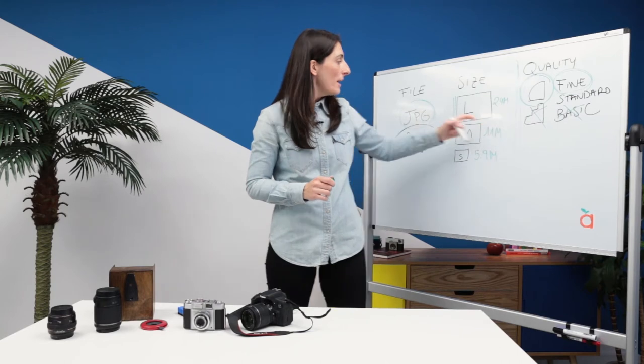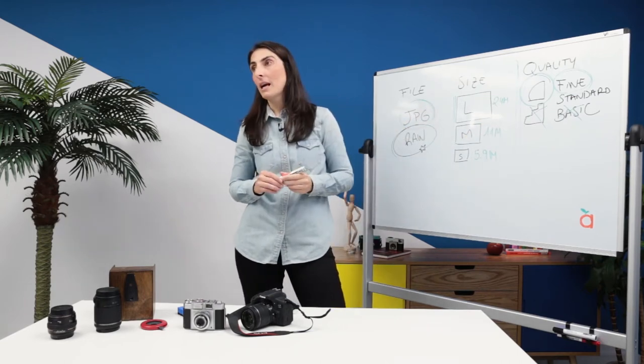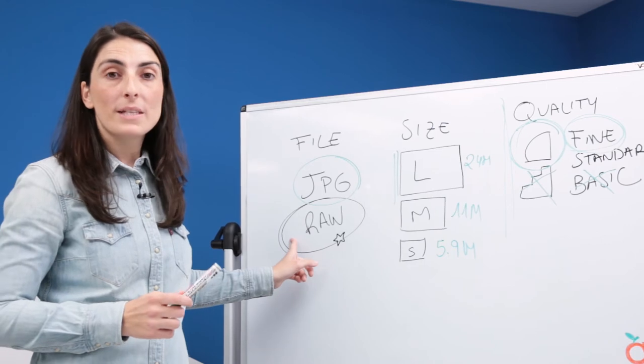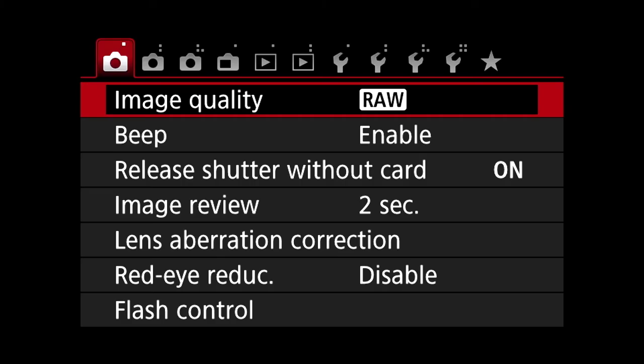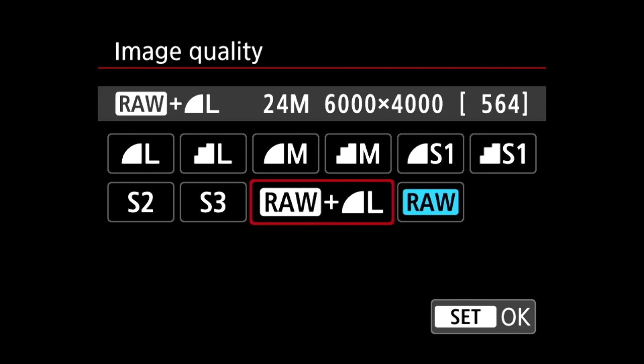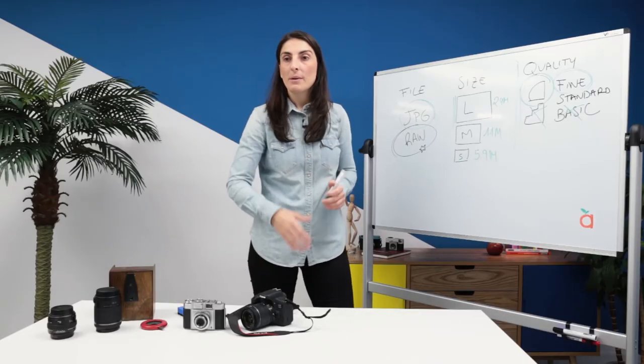But don't forget that these quality options only have to do with JPG files, since RAW files, as I said before, offer the highest quality in our camera. So, keep in mind the following. Don't start using RAW until we control our camera.